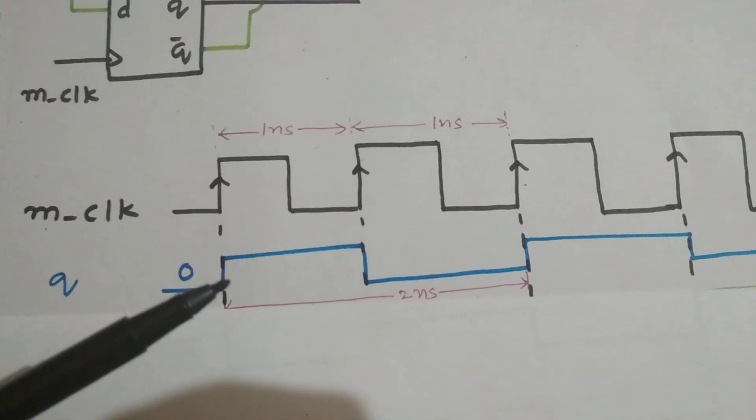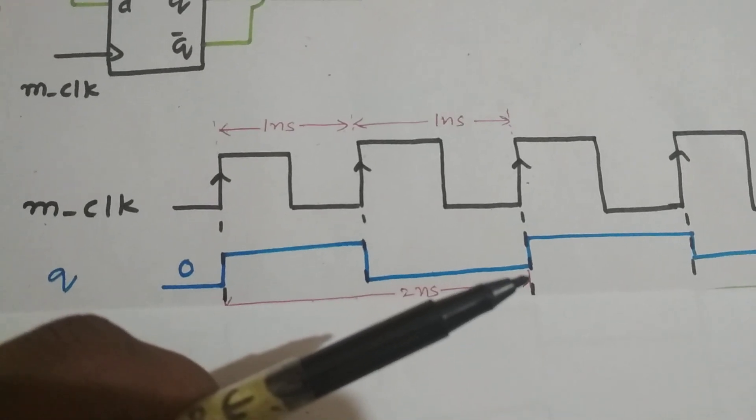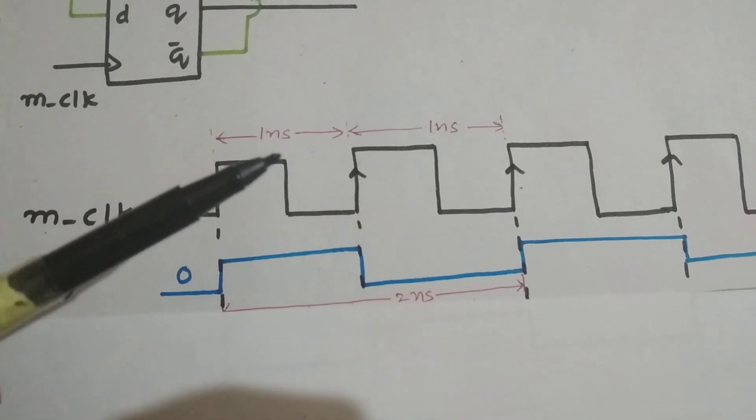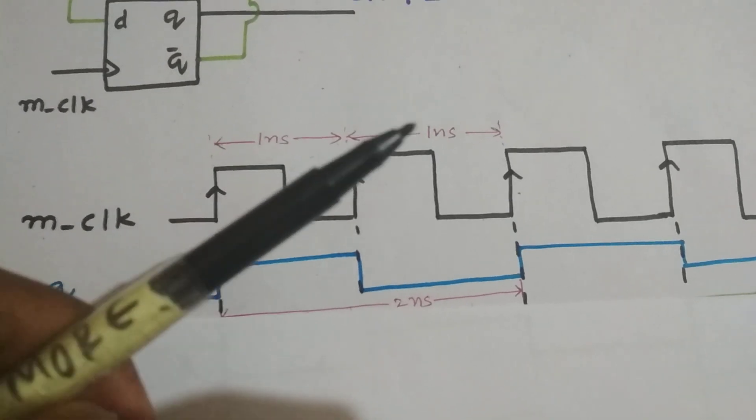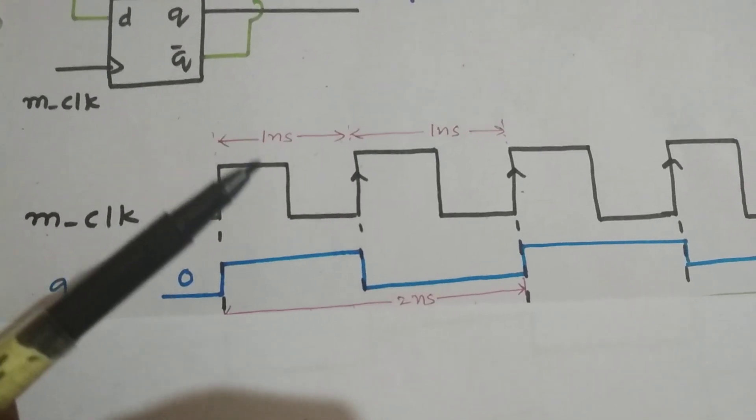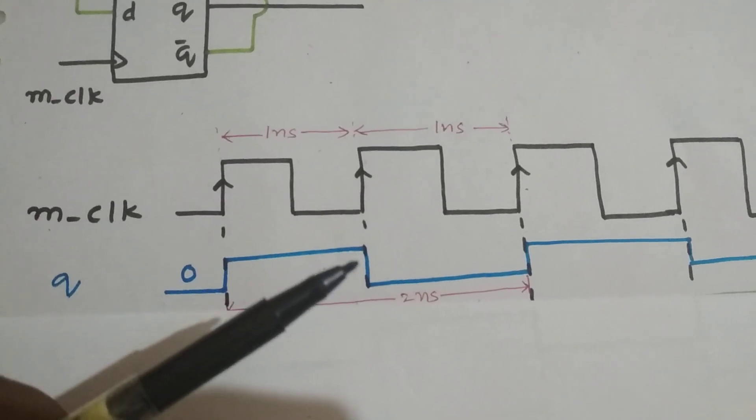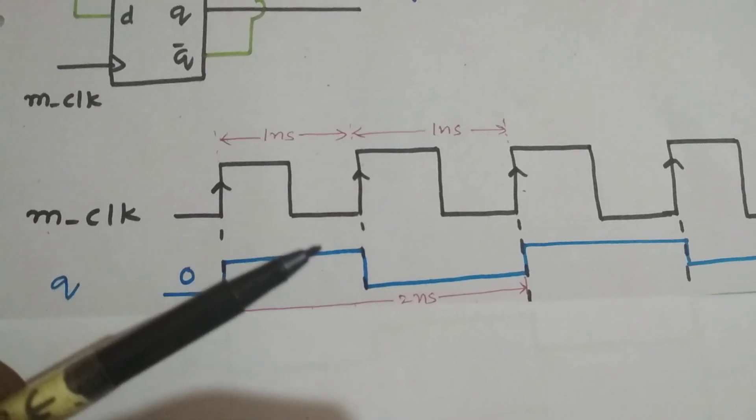As you can see, our generated clock time period is 2 nanoseconds and our master clock time period is 1 nanosecond. So we are covering two clock periods in a single cycle of our generated clock. How can we achieve this?